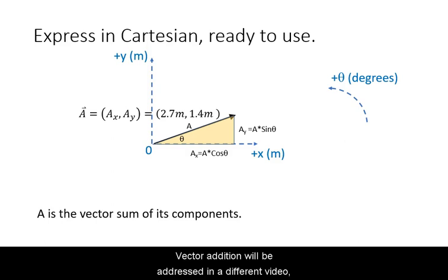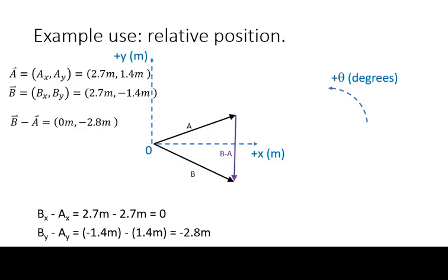Vector addition will be addressed in a different video, but as an example, here is the use of vector components using a consistent coordinate system in calculating relative position. Between two position vectors A and B, the position of B relative to A, expressed mathematically as B minus A, is 2.8 meters in the negative y direction.